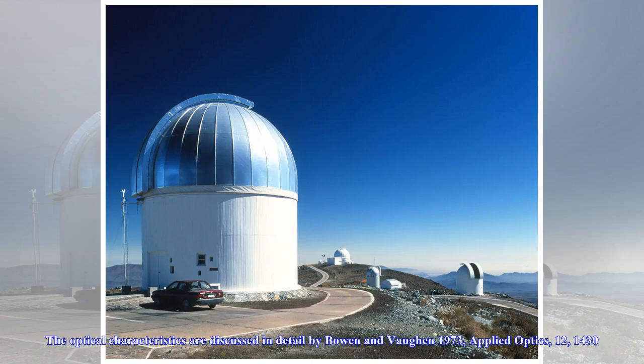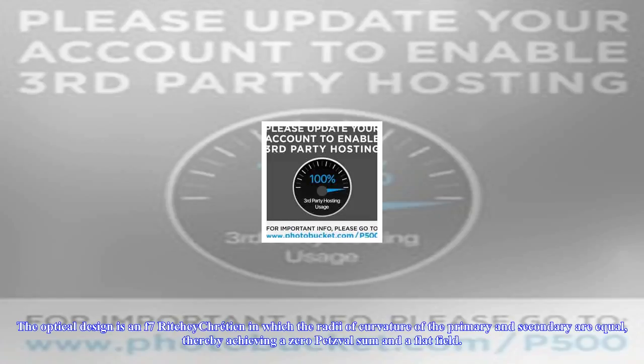The Swope Telescope was built by the Boller and Chivens division of the Perkin Elmer Corp. The optical characteristics are discussed in detail by Bowen and Vaughan in 1973, Applied Optics, 12, 1430.